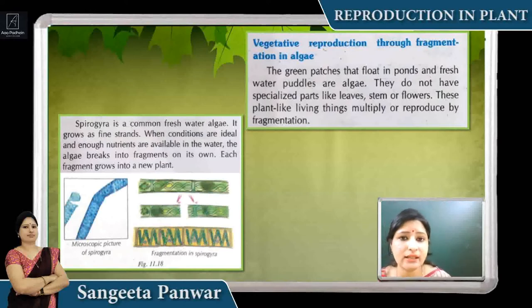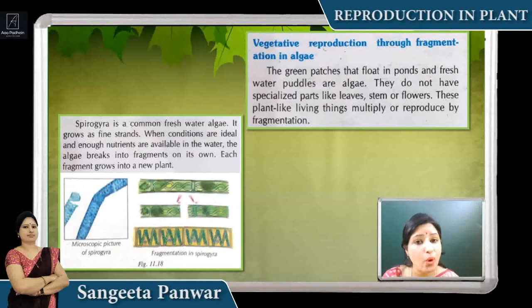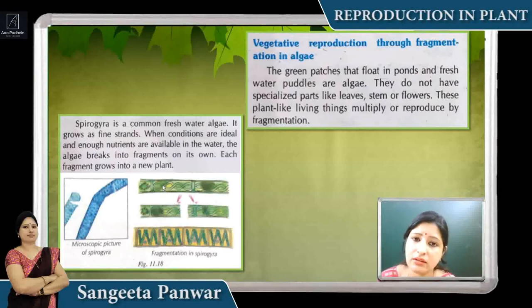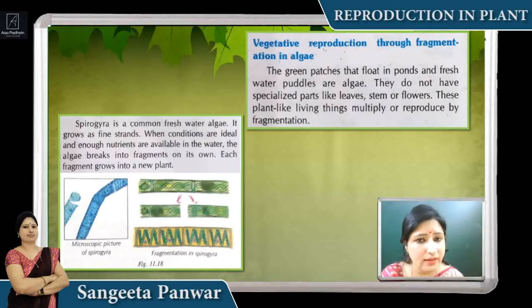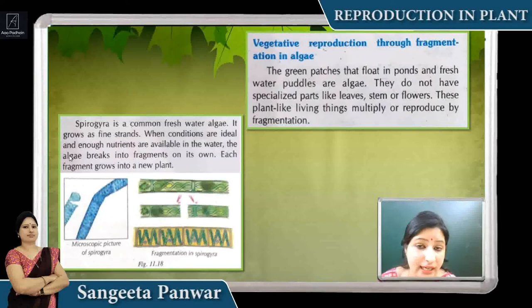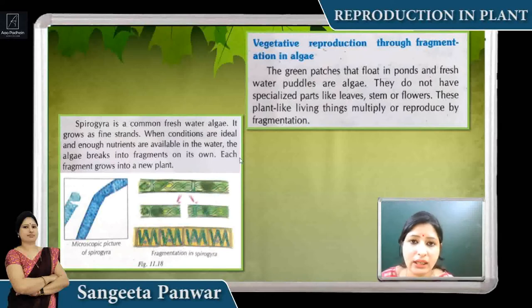In the rainy season, we see a lot of blue-green algae near ponds, soil, or walls. The main reason is that in the rainy season, proper conditions are available, so they grow in large numbers. Any part of algae, however small, if cut, grows and spreads to other areas and develops into new plants. In Spirogyra, which is a freshwater alga, it grows by fine threads. When ideal conditions are available — proper moisture, sunlight, water, and enough nutrients — they grow into new plants.